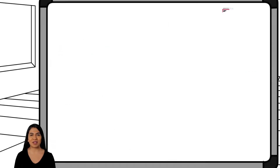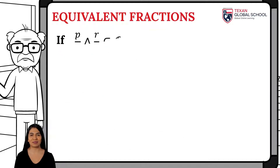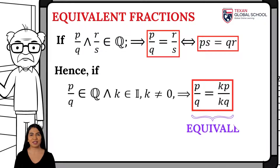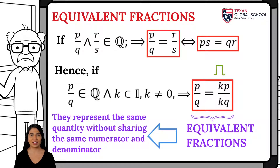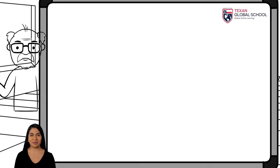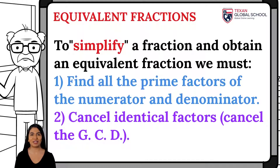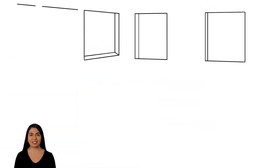Another essential concept is the equivalent fraction. Essentially, two fractions are equivalent if they represent the same quantity without sharing the same numerator and denominator. That is, they will have a greater common divisor k included in their numerator and denominator. To simplify a fraction and obtain a reduced equivalent fraction, we must find the prime factors of the numerator and denominator, then cancel identical factors, which are the greatest common divisor.